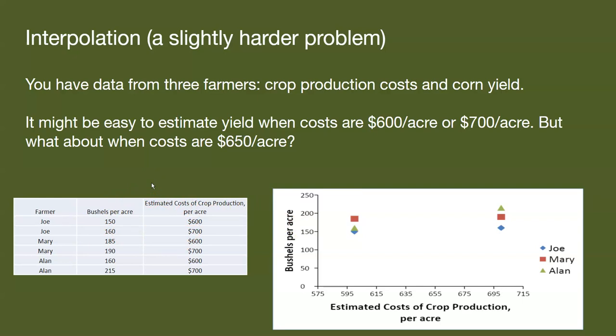For example, if we have data at $600 and $700 per acre, what might we say about it when we put in $650 per acre into crop production? How might that influence our yield or our bushels per acre?